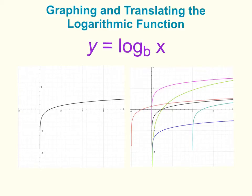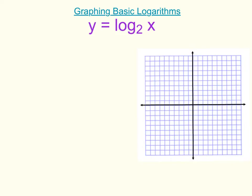In this video, we will be learning about graphing the logarithmic function, and then talking about how when you make changes in the equation, how it will affect the graph — how it might shift the graph down or to the right, to the left, and it might cause the graph to shrink or to stretch or even reflect in the x-axis. We will first graph a basic logarithmic function with base 2, and then talk about what happens when we make changes in the equation and how those changes result in translation of the graph.